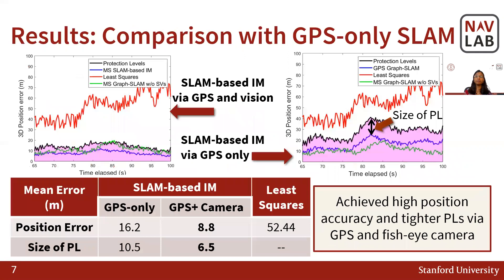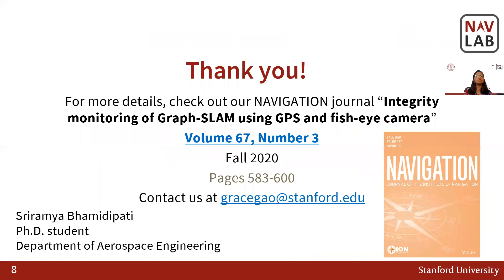Next, we validated the performance of the proposed SLAM-based IM using GPS and fisheye camera, which is indicated by the blue line on the left, as compared to GPS-only SLAM-based IM, which is shown by the blue line on the right. Our proposed algorithm achieves a low mean position error of 8.8 meters and a protection level size of 6.5 meters. For more details, check out our paper in the Fall 2020 issue. Thank you.